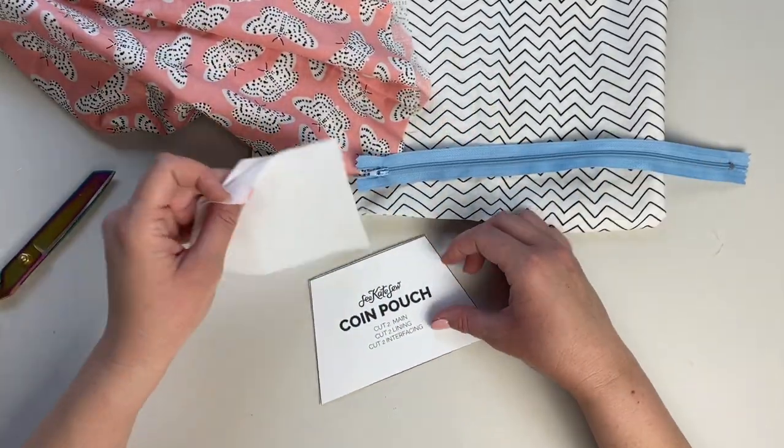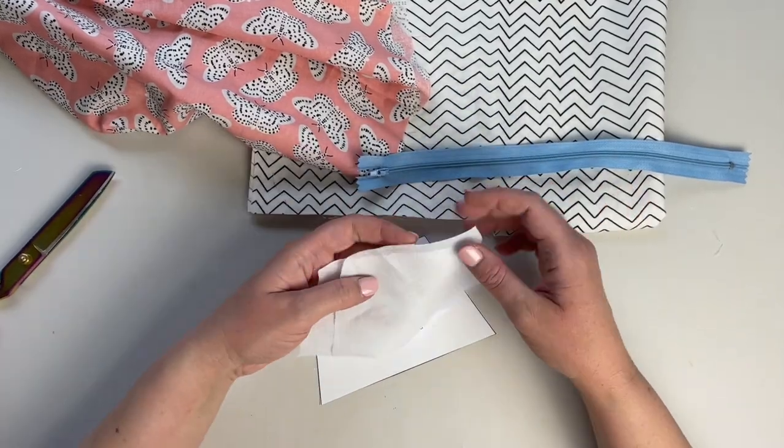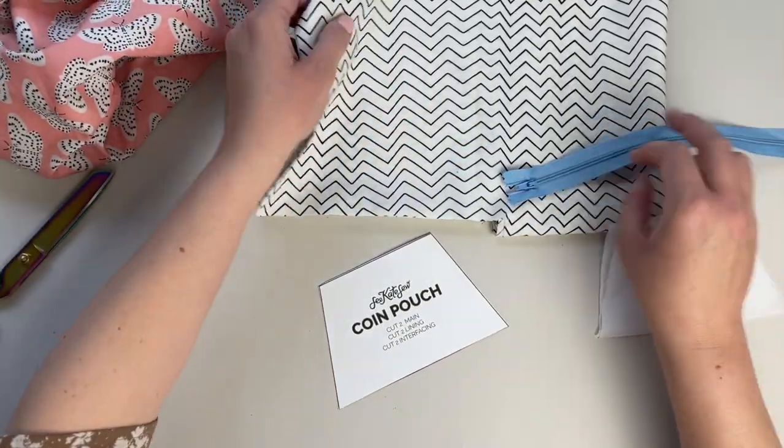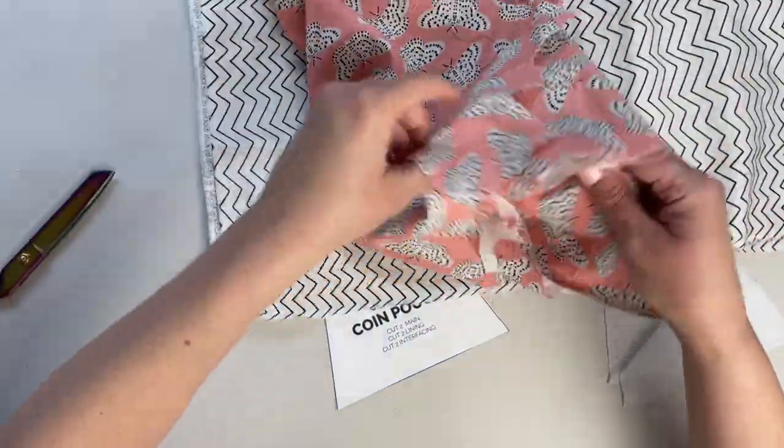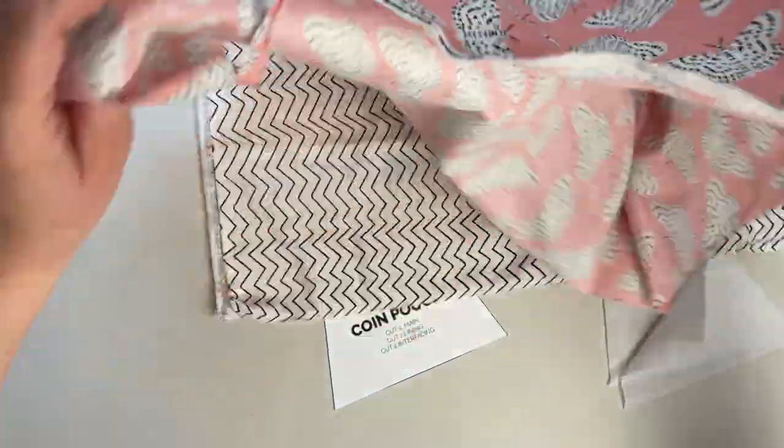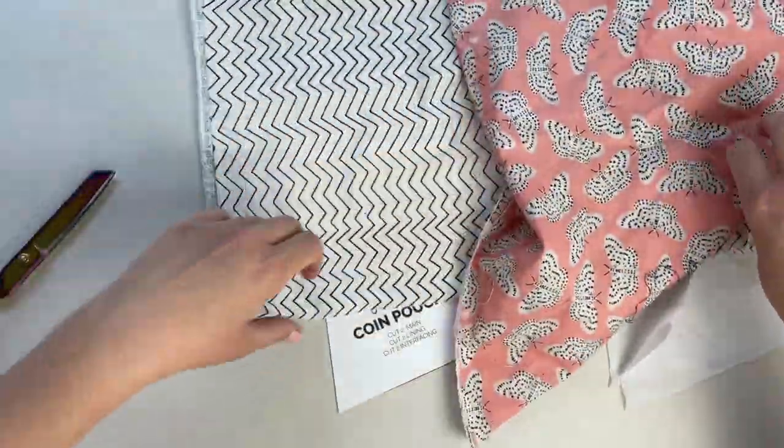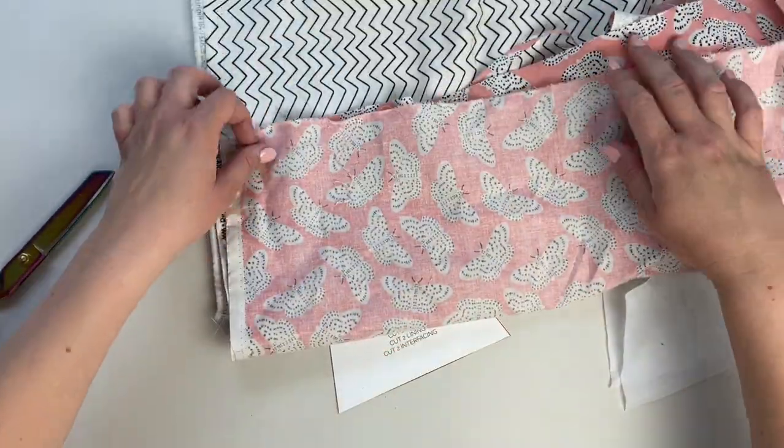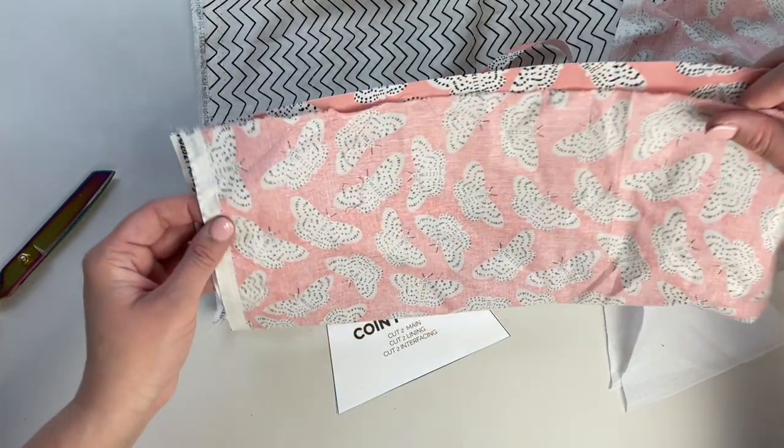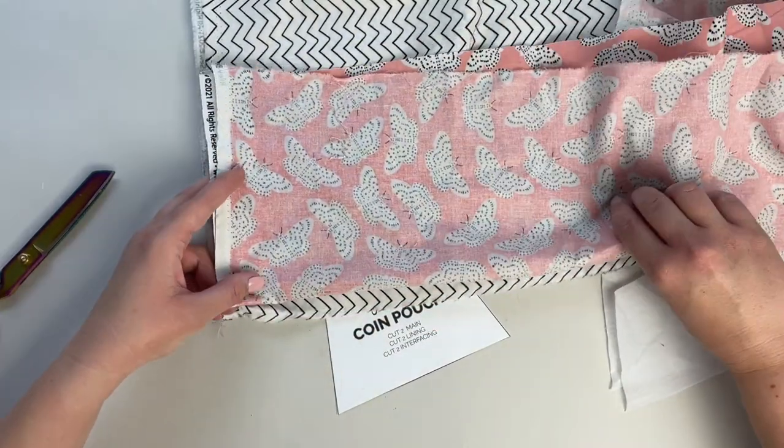So I cut out two layers of fusible interfacing, and then I'm going to cut two layers of the lining fabric and two layers of the main fabric. I'm just going to fold these fabrics so I can do them all in one. So I'm going to double this one over and cut four fabrics at a time.